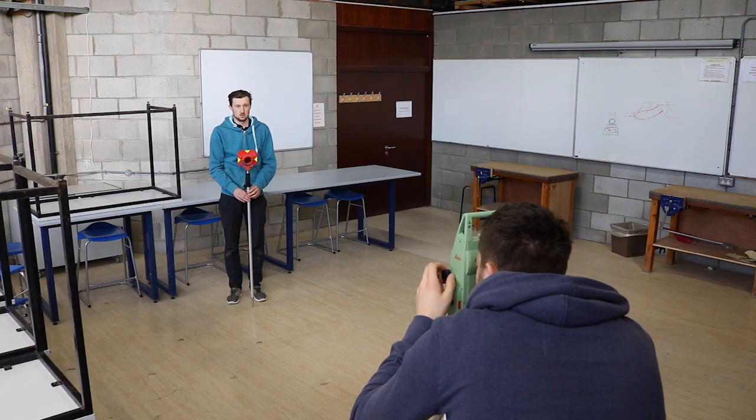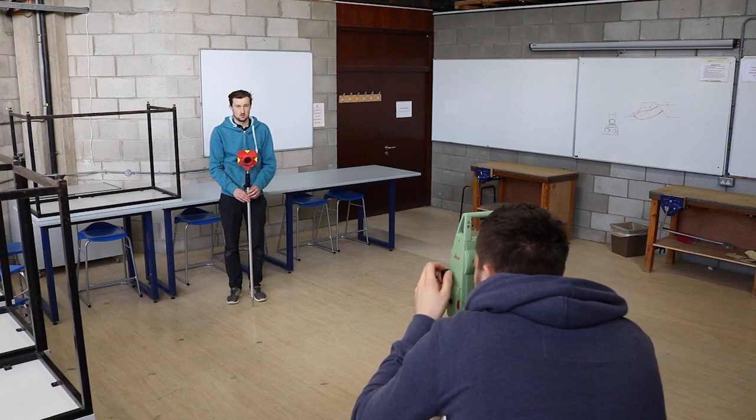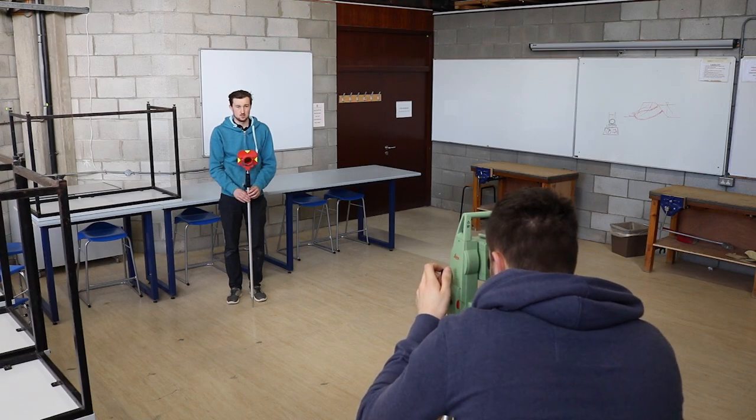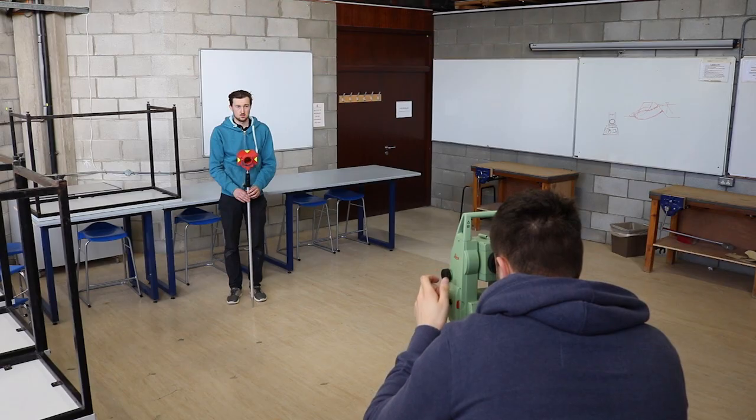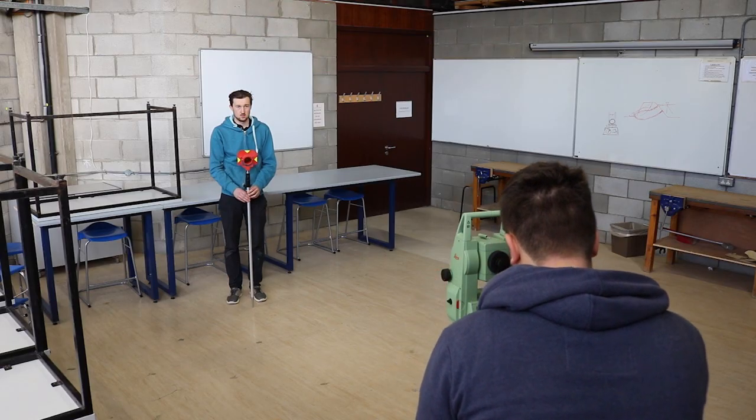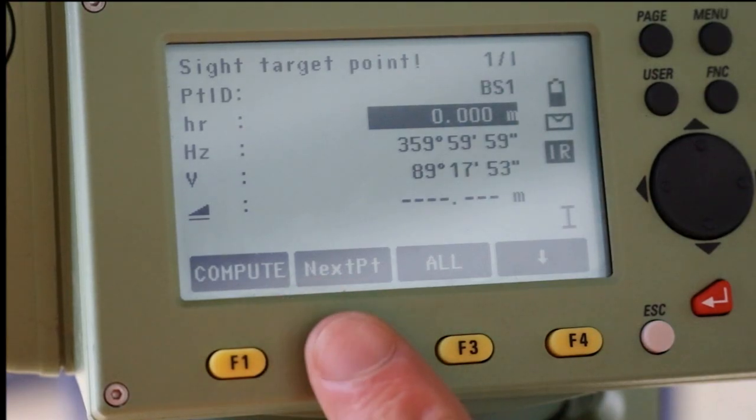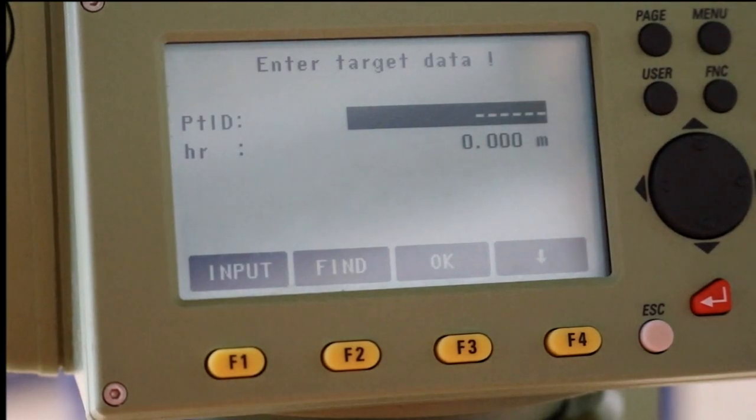Next, use the vertical fine adjustment screw to center the crosshairs on your target. Select the all option to shoot the point and record the data. Select the next point and repeat this process for another backside.